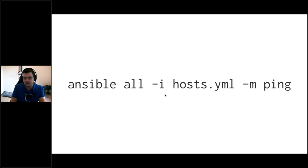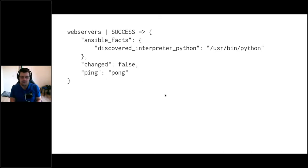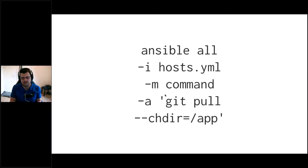Once Ansible knows where to connect, we give it a command to run. The first one I use is ping: run the command against all hosts, pass an inventory file using dash-i, and dash-m specifies the module — the ping module in this case. The output shows a success message, Ansible found Python on our server, nothing changed, and it returns pong. We can also use the command module to run basic shell commands. If we've got a git repository on our server, we can go into /app and just run a git pull — piping shell commands straight into the command module.